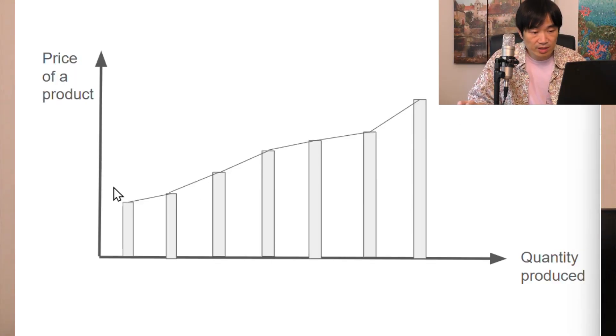So if the price is this high, now only two units will be produced. But if the price is this high, that means five units will be produced. Because if your production cost is higher than the market price, you won't be able to make it without losing money. So the market price is like the tunnel, and your cost is like the height of your car.